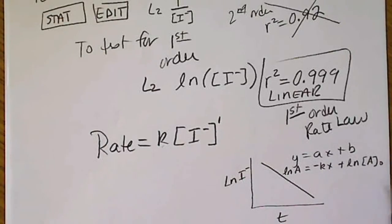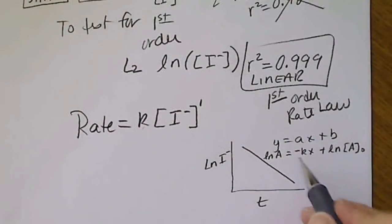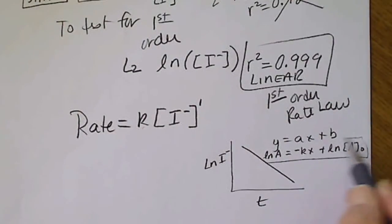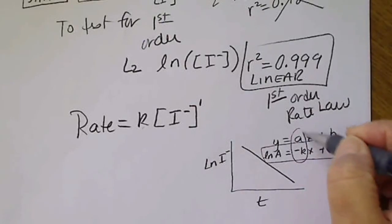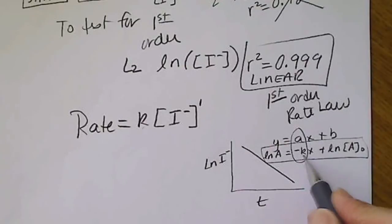And remember that first-order equation is the natural log equals negative kx plus the natural log of the initial concentration. So because this is the first-order equation, the slope is actually going to be the opposite of the rate constant.